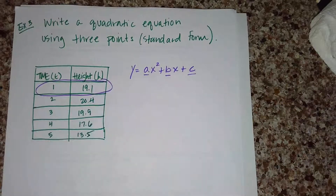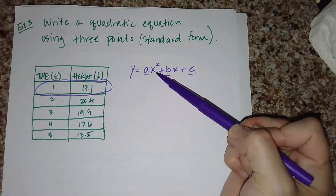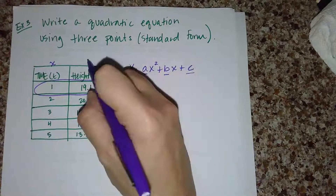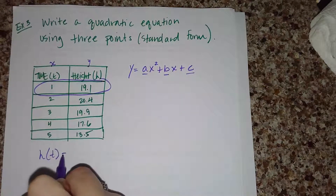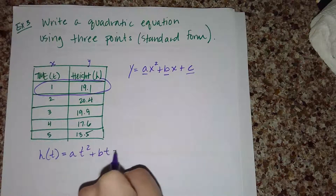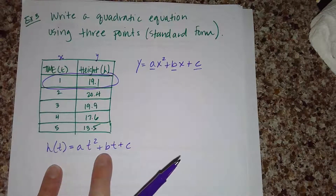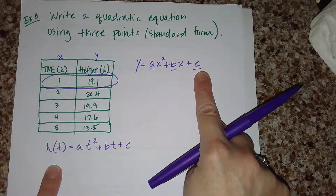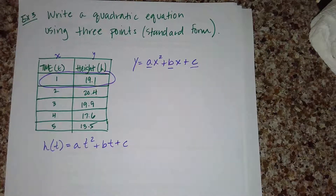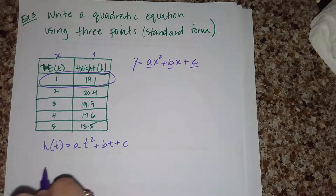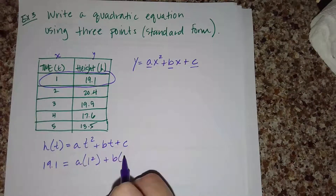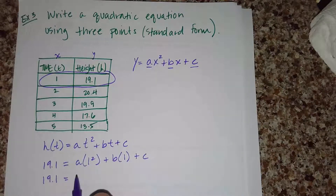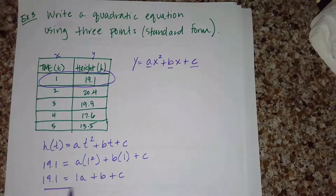Let's pick the first point: (t = 1, h = 19.1), where t represents x and h represents y. Plugging into the standard form equation — written as h equals at squared plus bt plus c — I substitute 1 for t and 19.1 for h, giving me: 19.1 equals a times 1 squared plus b times 1 plus c. That's our first equation.